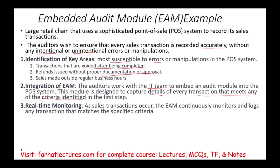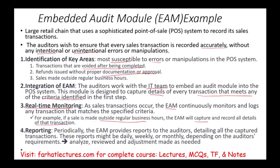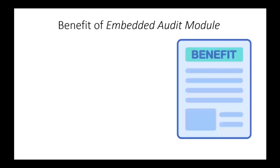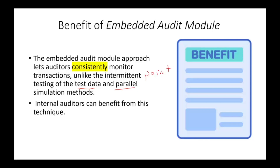The EAM performs real-time monitoring: as sales transactions occur, it continuously monitors and logs any transaction matching the specified criteria. For example, if a sale is made outside business hours, the EAM captures and flags that transaction, reporting it to the auditor. This report can be reviewed daily, weekly, or monthly. The benefit of the embedded system is that it consistently monitors transactions — unlike the test data or parallel simulation approaches, which are point-in-time. That's why it's a great technique for internal auditors to monitor company transactions on a real-time basis.